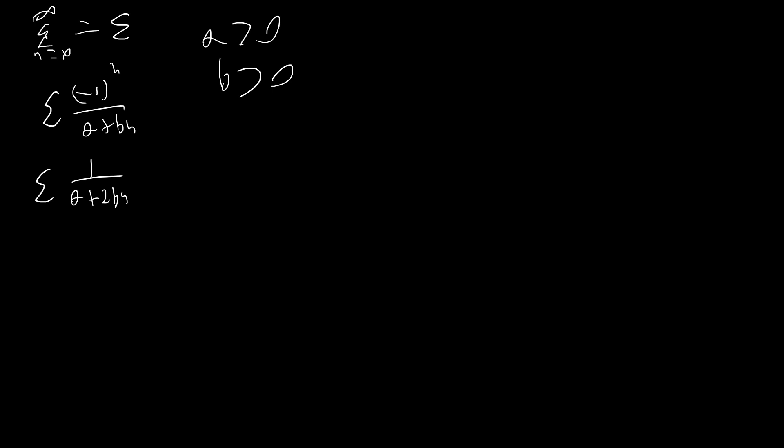And then if we look at our odd terms, or not our odd terms I'm sorry, if we look at our negative terms, they're gonna be negative 1 over a plus b, 1 over a plus 3b, 1 over a plus 5b, etc. So these terms are gonna just be the general formula minus 1 over a plus b plus 2bn.